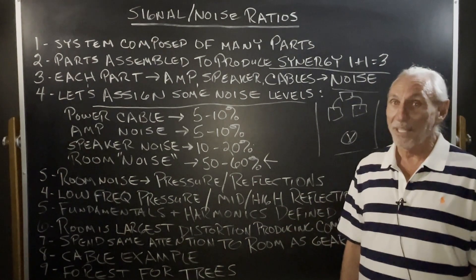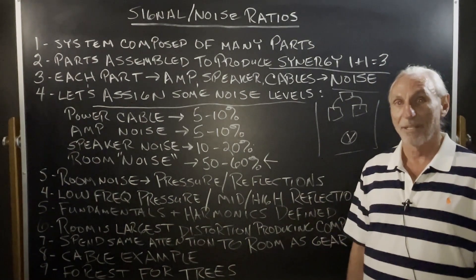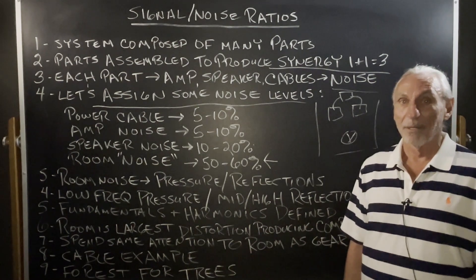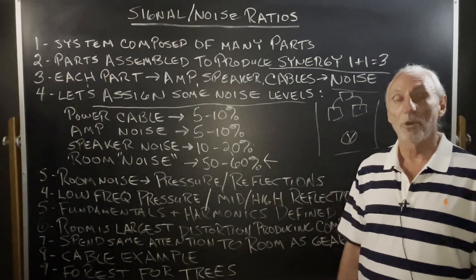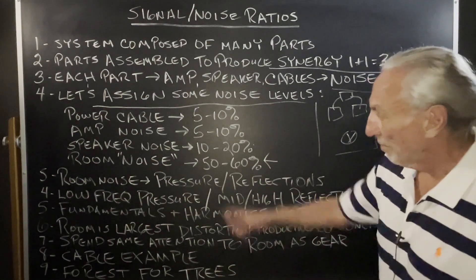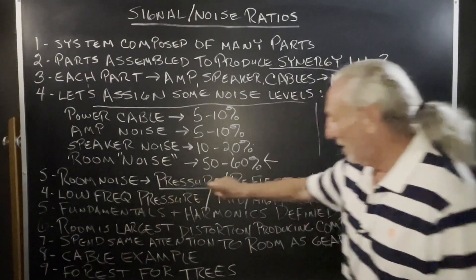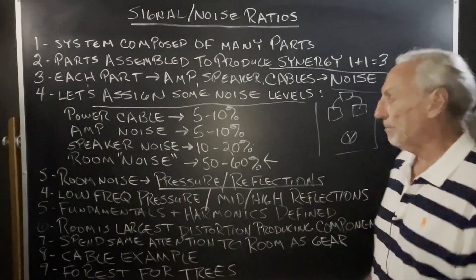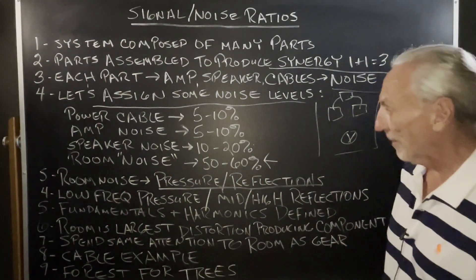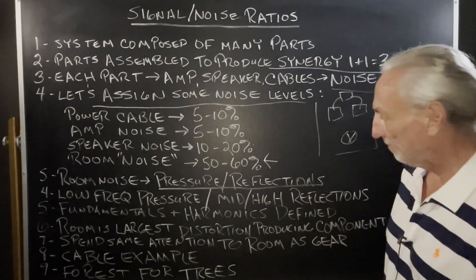The room is the highest distortion source of all our components, and it is a component. If you don't think it is, come to my studio and listen — you'll know immediately the power of the room and what you've been missing. We've got room noise: pressure, low frequency, reflections, and reverberation. Low frequency pressure, mid and high reflections — that's what we have to balance out.